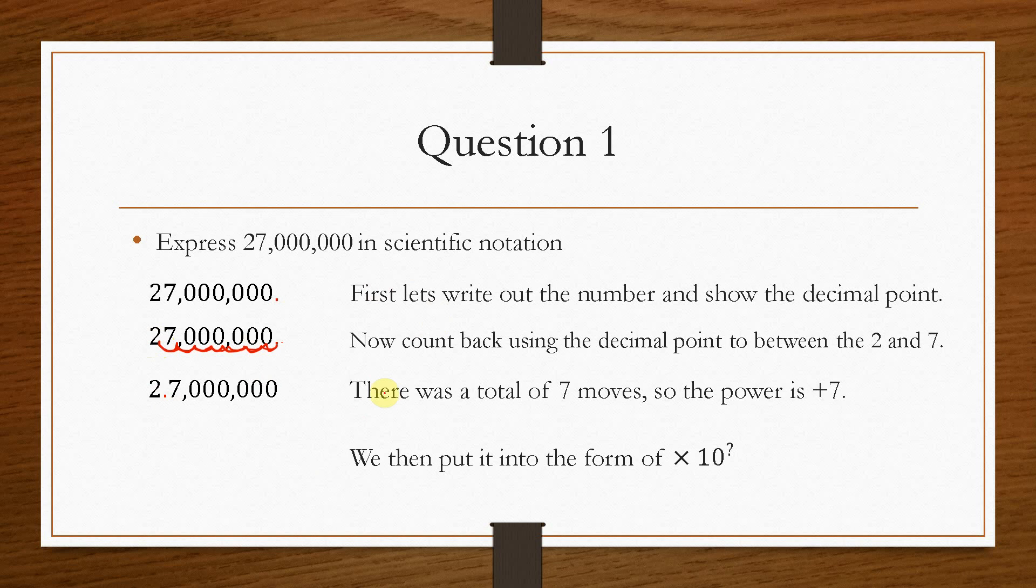So what that tells us is that the power is going to be positive 7. So therefore what we do is in the Scientific Notation is always working to the power of 10s, because remember we're moving the decimal place, so we're going in increments of 10s. So this is all this is, is just counting 0s, either in the positive or in the negative direction. So what that tells us here is we're going to have 2.7 times 10 to the power 7. So that's how we would express this in Scientific Notation.